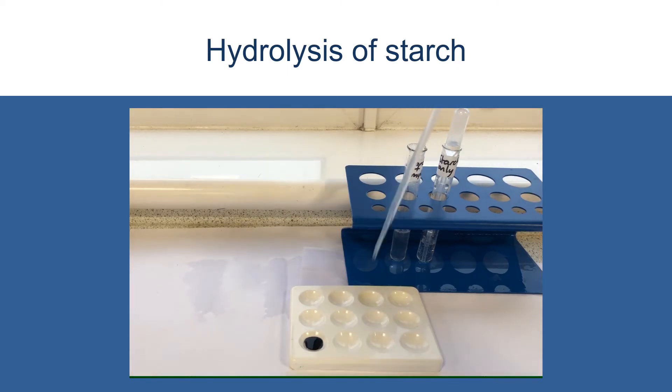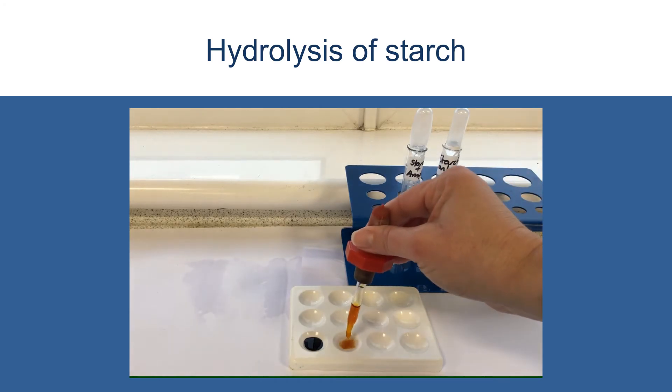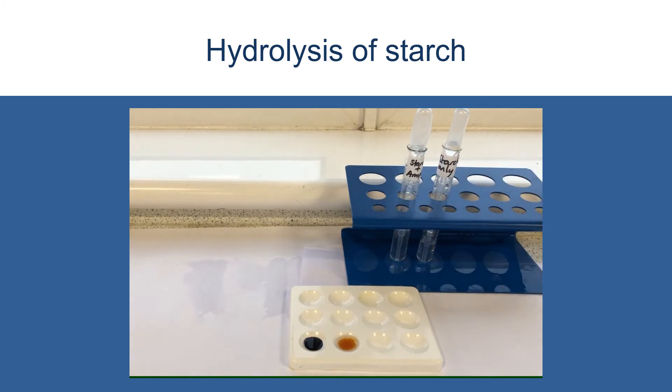This is the starch that had the enzyme added to it. So put a little bit of that in there and add a few drops of iodine solution. And what you'll see is that we are now no longer getting that blue-black colour change. So that indicates there's definitely been a change with the starch.